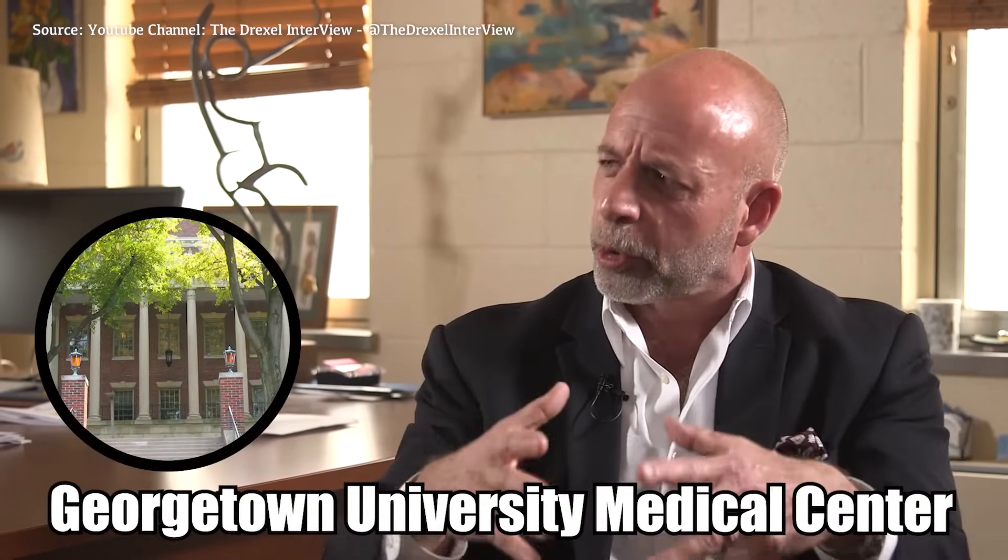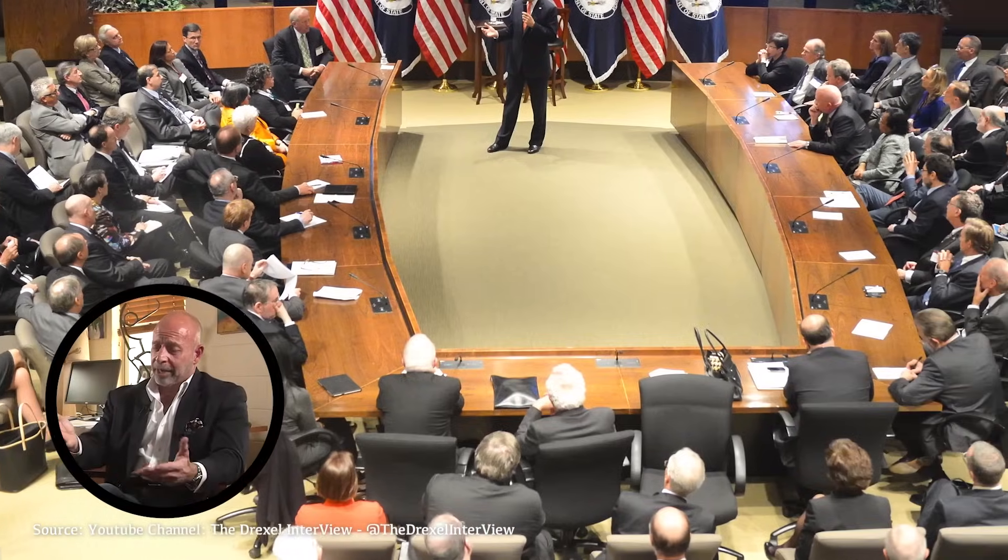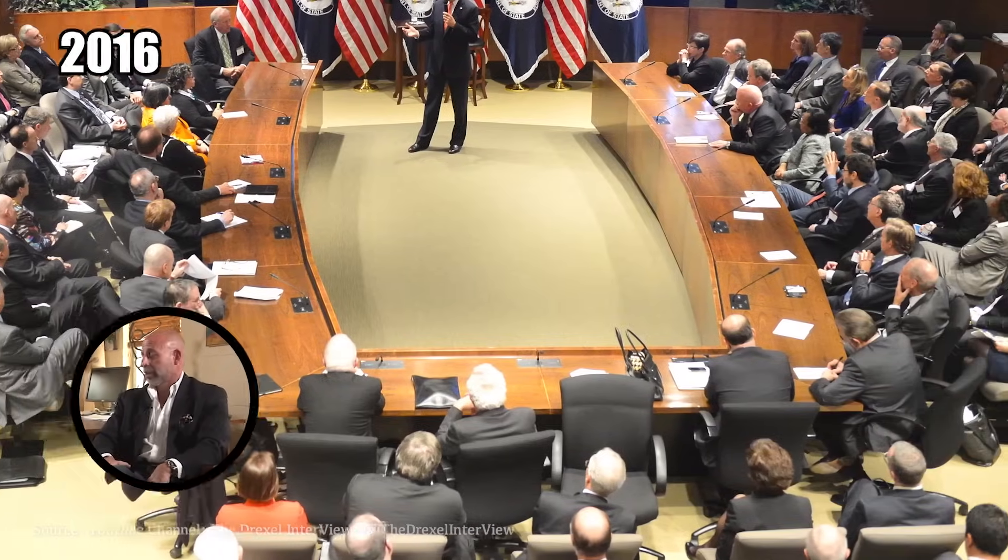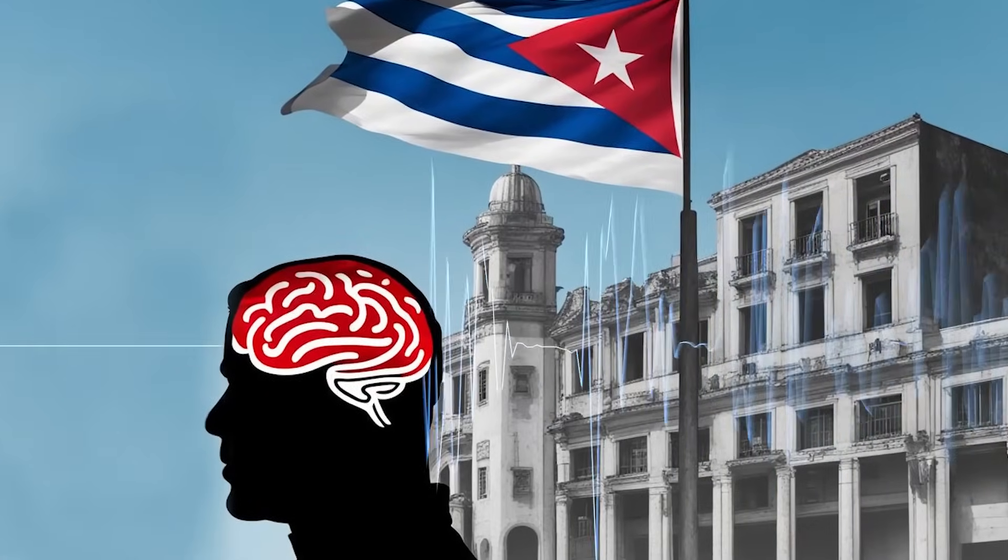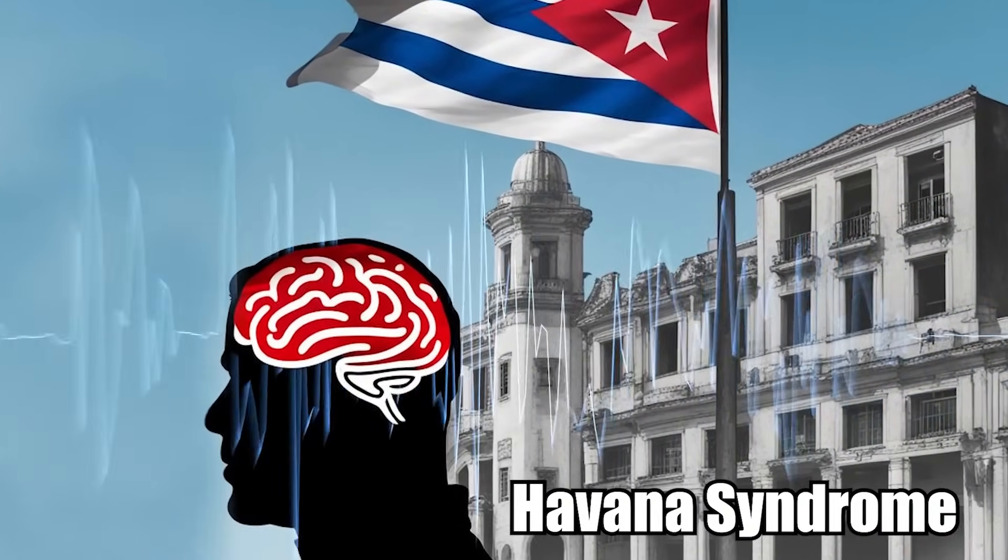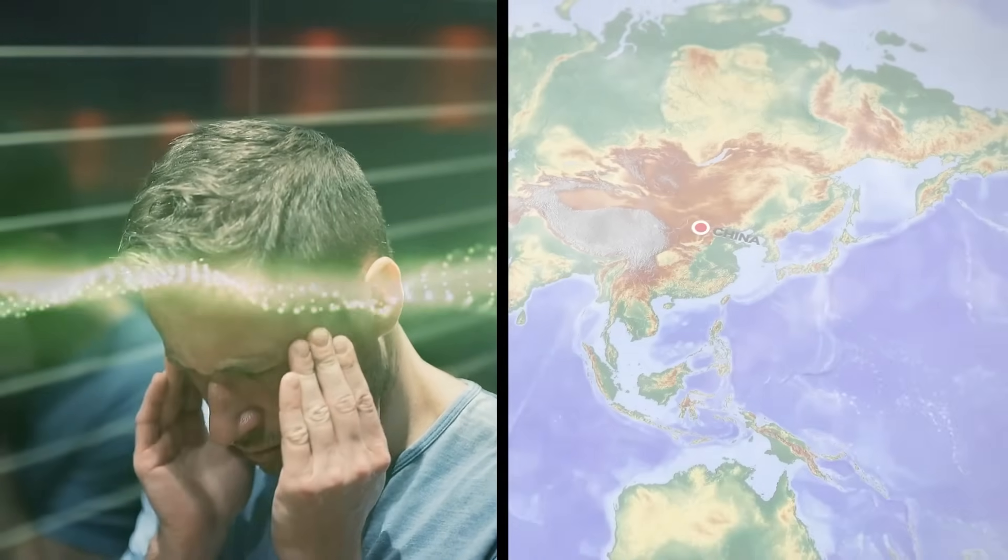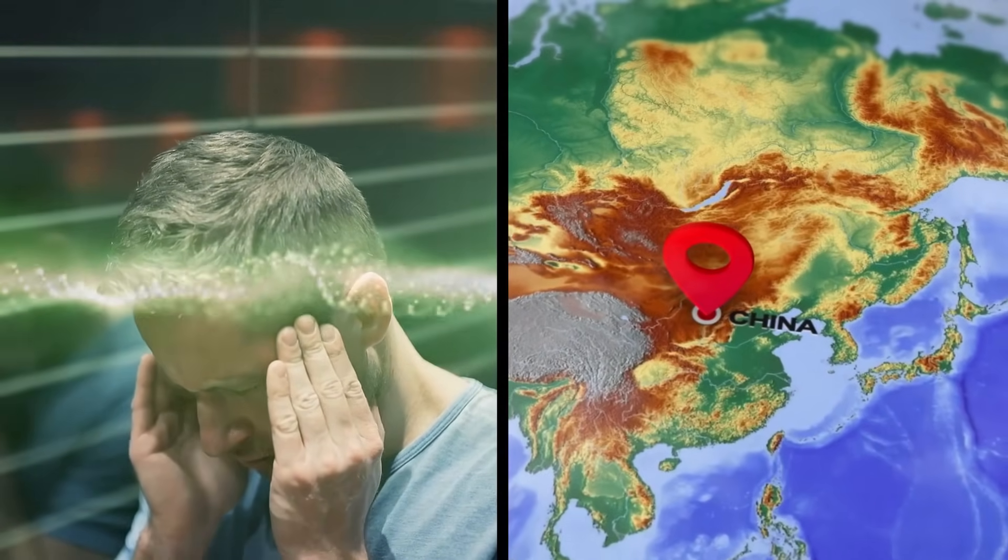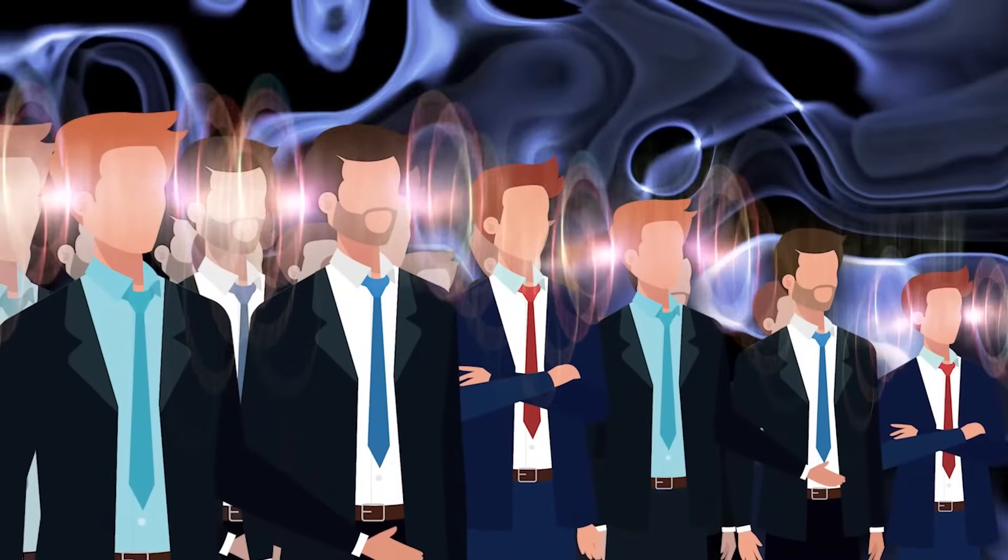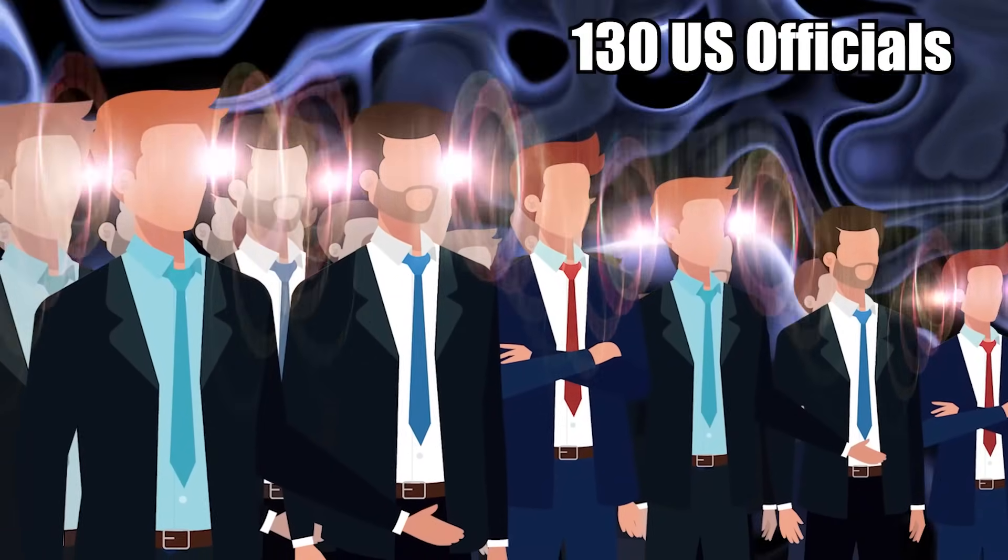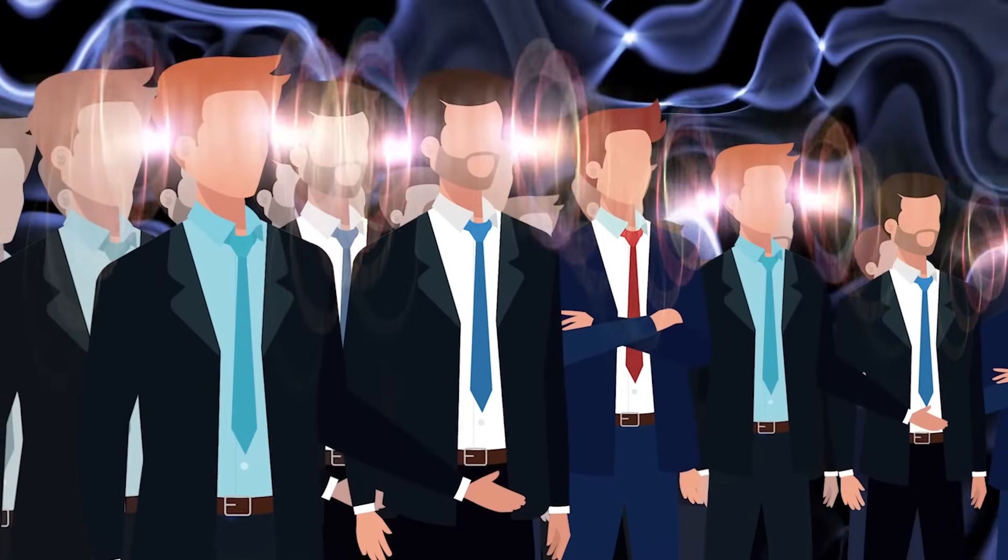But according to James Giordano, a professor of neurology at Georgetown University Medical Center, other nations continued their research. James was one of the scientists that were brought in by the government in 2016 to investigate two dozen US diplomats who got sick in Havana. The diplomats suffered from what's now been labeled Havana Syndrome. Additionally, US diplomats and intelligence officers suffered from the syndrome again two years later in China. And in total, around 130 US officials in the last few years have suffered from Havana Syndrome.